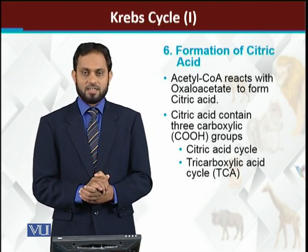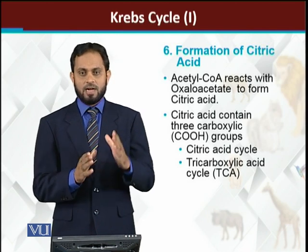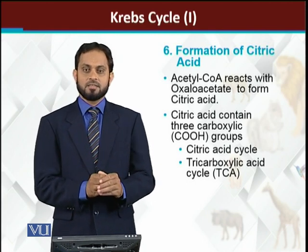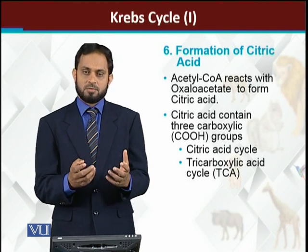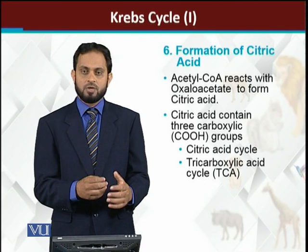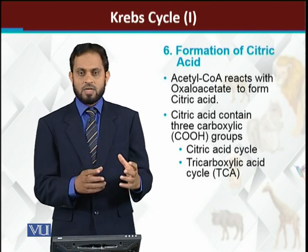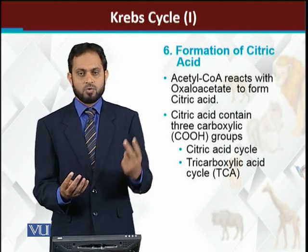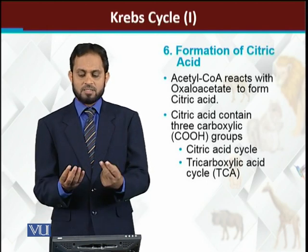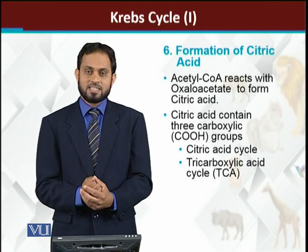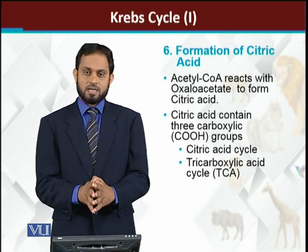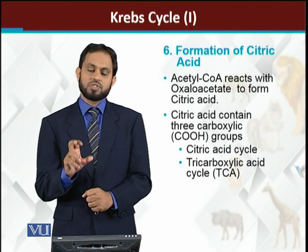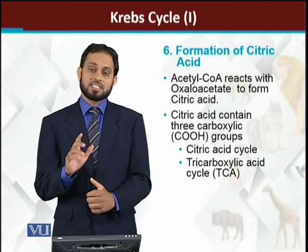Formation of citric acid: this is where the citric acid cycle starts. The acetyl-coenzyme A formed combines with oxaloacetate inside the mitochondria. Oxaloacetate is a 4-carbon molecule and acetyl-coenzyme A is a 2-carbon molecule; combining them gives a 6-carbon molecule — citric acid.